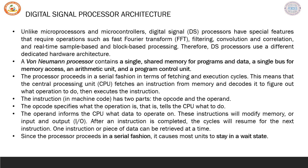Traditionally, we have learned about the von Neumann architecture, which contains a single shared memory used both for saving the programs as well as the data. This single memory will have a single bus associated with it, and the same bus will be used when accessing the programs as well as the data. In this arrangement, the processor will execute programs in a serial fashion — first it fetches the instruction and then proceeds for execution.